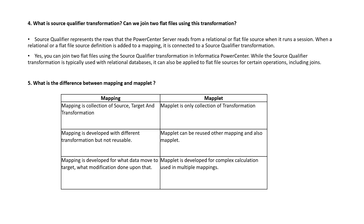Can we join two flat files using the Source Qualifier transformation? Yes, we can join two flat files using the Source Qualifier transformation. It is used for relational databases as well as flat files, so for certain operations we can include joins as well.